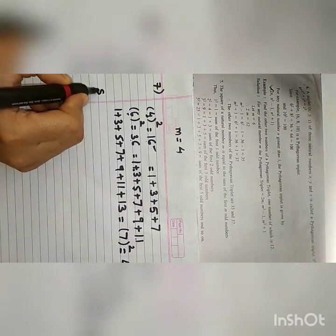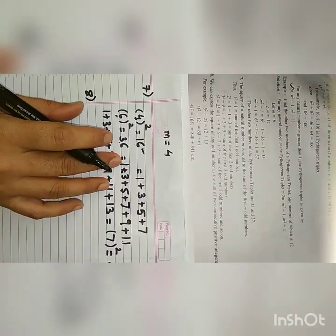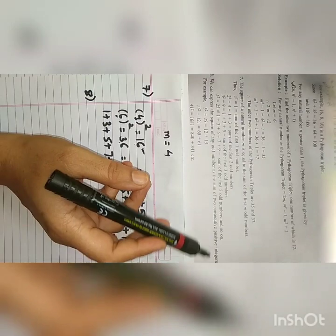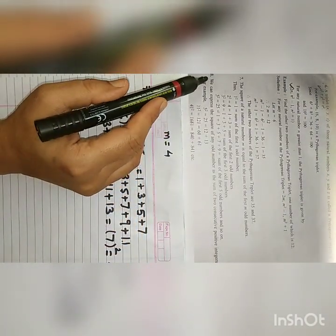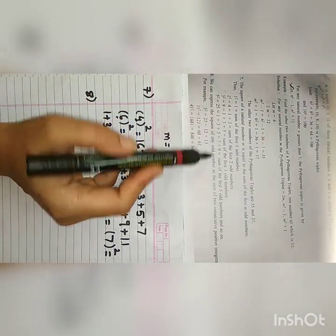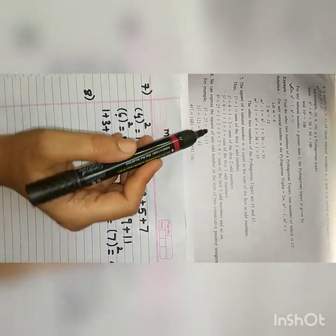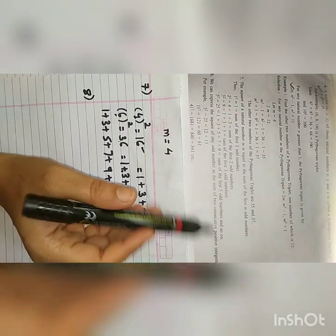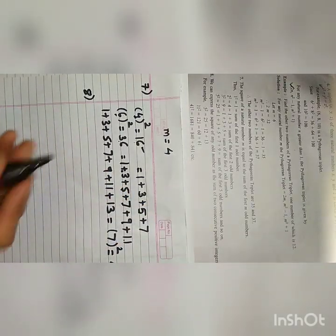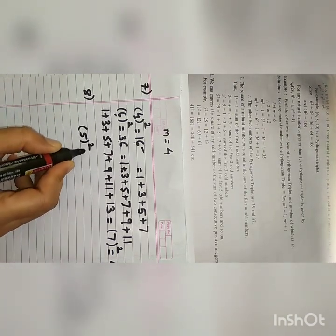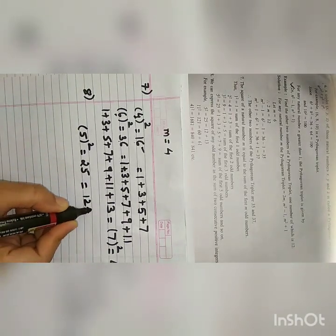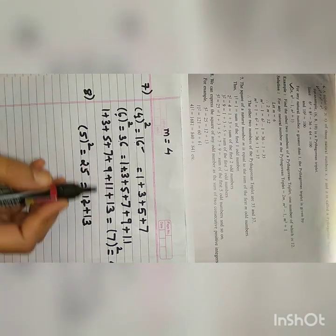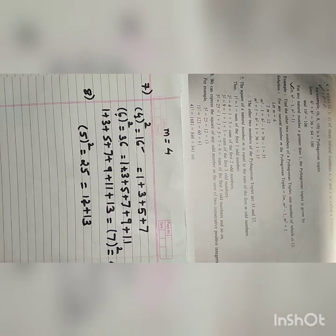Now we will go with property number 8. We can express the square of any odd number as the sum of 2 consecutive positive integers. For example, square of 5 is 25, which can be written as 12 plus 13 — these are 2 consecutive positive integers. Square of 7 is 49, which can be written as 24 plus 25, giving 49. These are 2 consecutive positive integers.